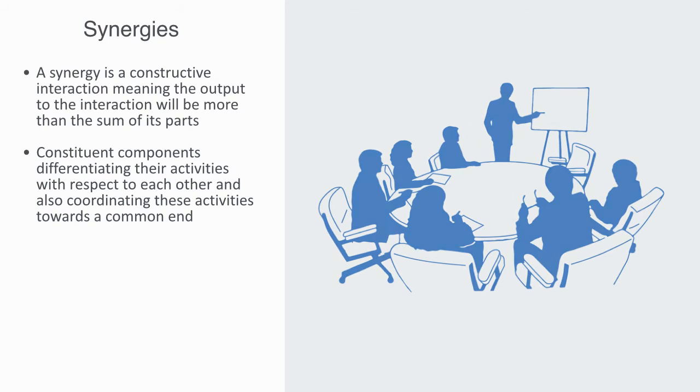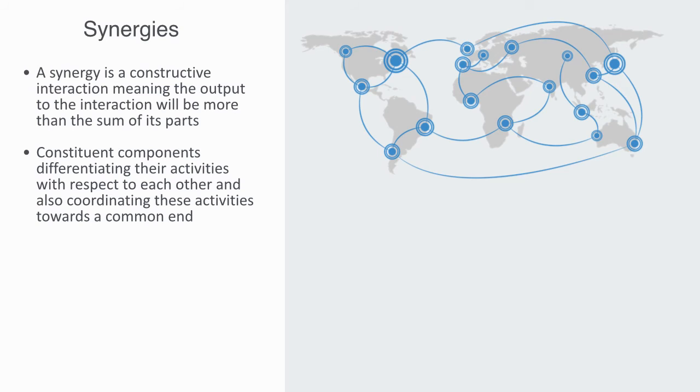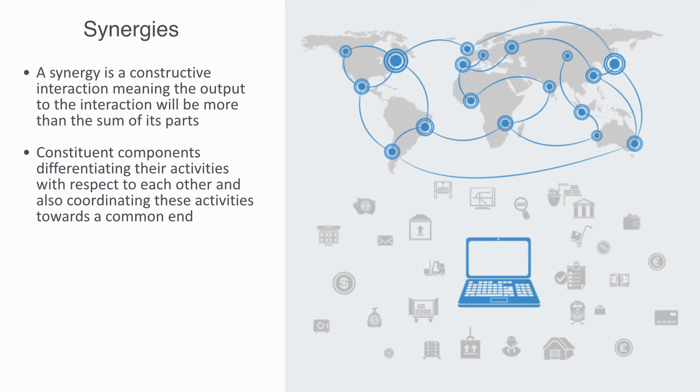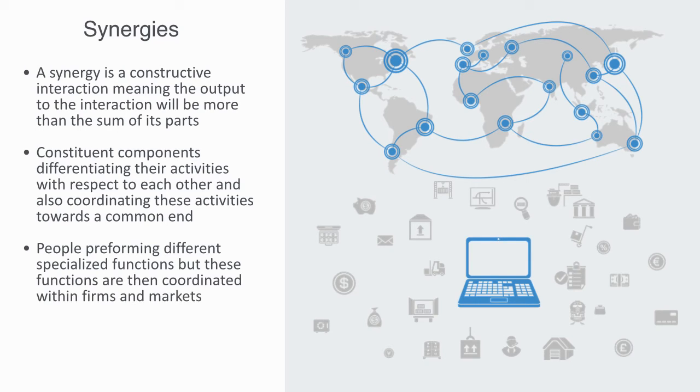One of the best examples of this is our global economy. Many millions or even billions of people performing different, specialized functions. But these functions are then coordinated within firms and markets. So that we can get something like a laptop computer, that no one person could create. It's only through this process of differentiation and then reintegration, that value is added to the system.